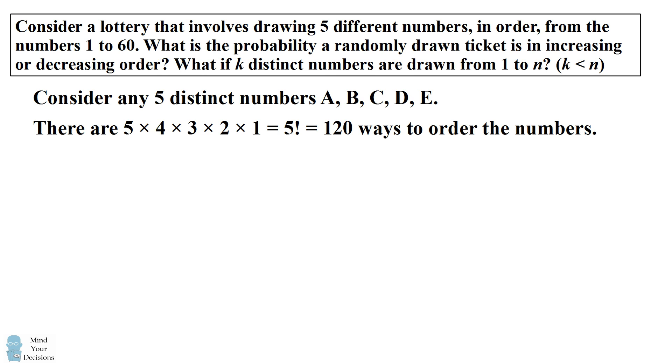Out of them, how many ways are there to arrange the numbers in strictly increasing order? There's only one way. You have to put the smallest number first, then the next smallest, then the next smallest, all the way to the largest number.